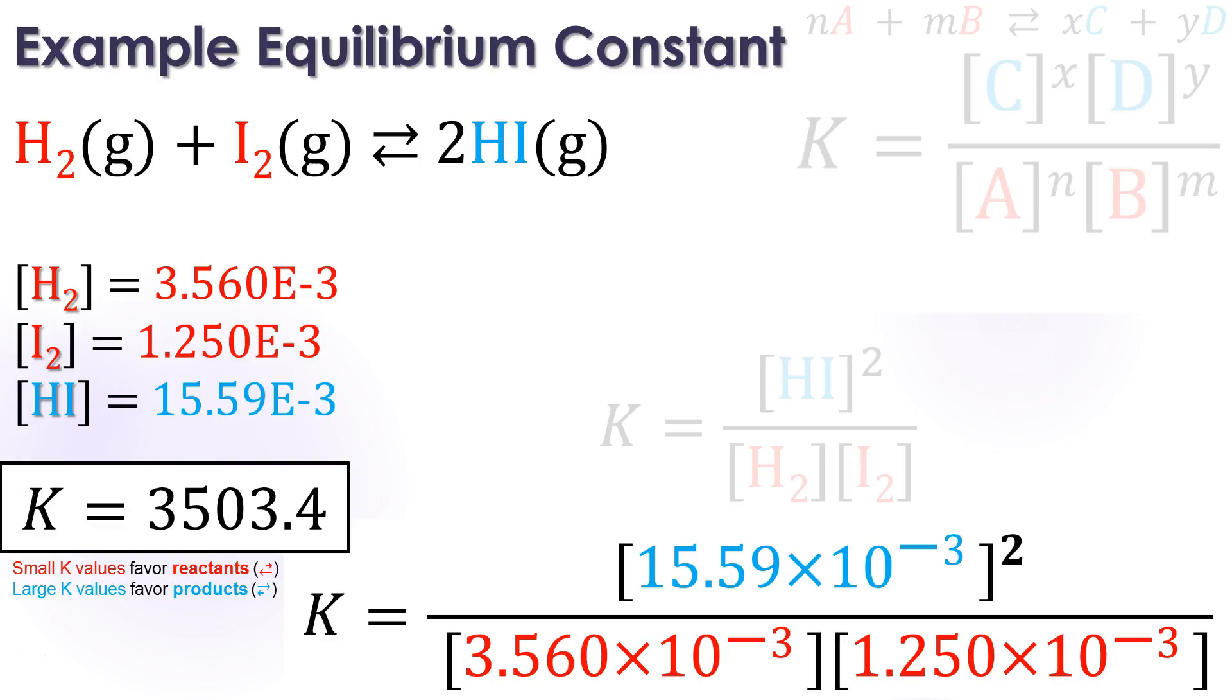Now remember, small K values are going to favor reactants. Large K values are going to favor products. So looking at this right here, we have a large K value. We are going to get a lot of product made with this particular reaction.